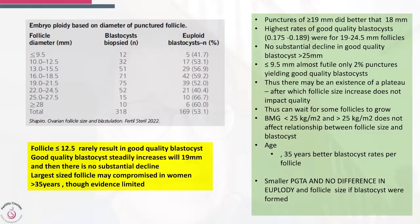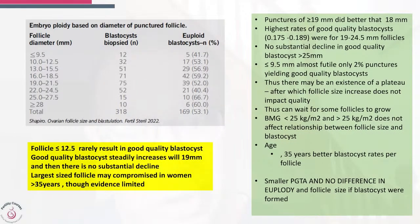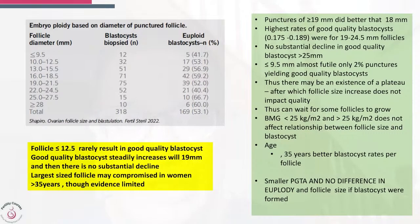What does this study tell us? It tells us that follicles of 19 millimeters or more did better than 18 millimeters. The highest rates of good blastocysts were for follicles between 19 and 24.5 millimeters. There is no substantial decrease in oocyte or blastocyst quality after 25 millimeters. It is futile trying to aspirate follicles of less than 9.5 millimeters.